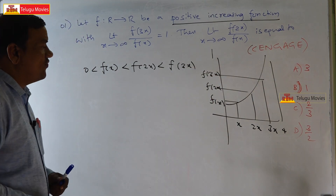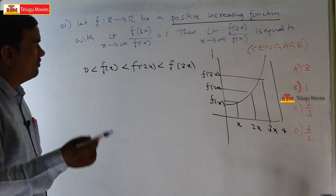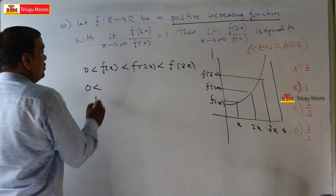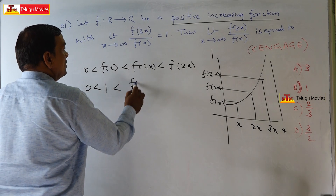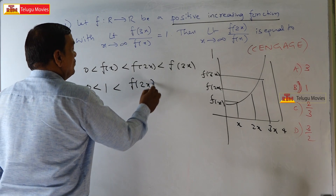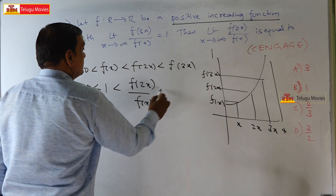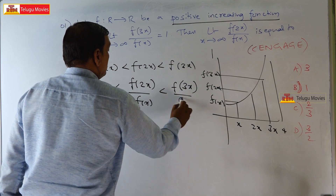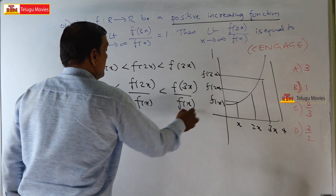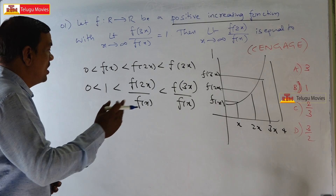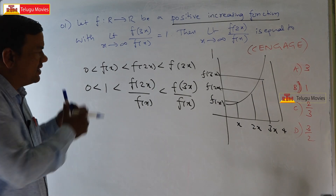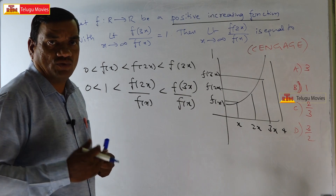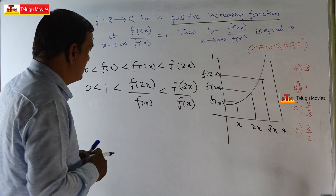Since f(x) cannot equal 0, we divide with f(x). This gives us: 0 < 1 < f(2x)/f(x) < f(3x)/f(x). By seeing this inequality, you can remember the sandwich theorem.